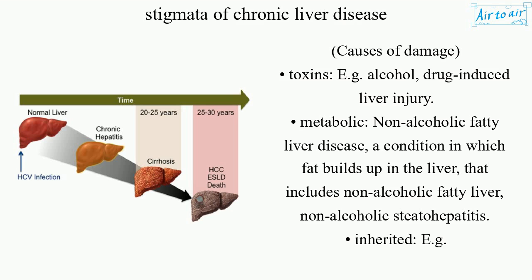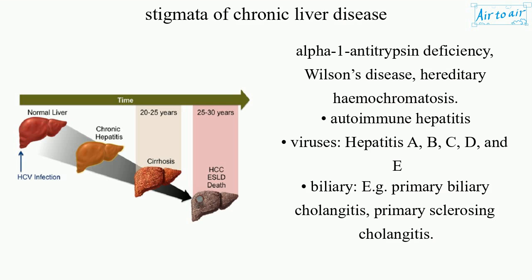Inherited causes include, e.g., alpha-1 antitrypsin deficiency, Wilson's disease, and hereditary hemochromatosis. Autoimmune hepatitis is also a recognized cause. Viral causes include Hepatitis A, B, C, D, and E.